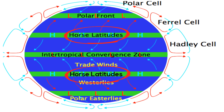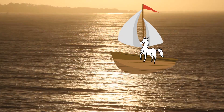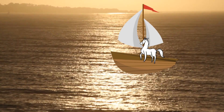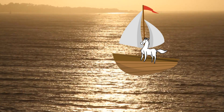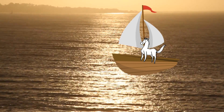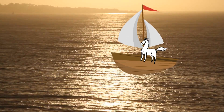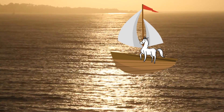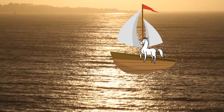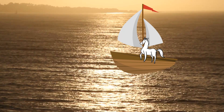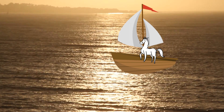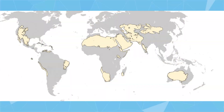These areas are called the horse latitudes because, according to legend, this name was given when sailing ships carried horses from Europe to America, and when the ships were stuck in the windless area, horses were maybe thrown overboard to save drinking water for the sailors. Remember, this is just a legend. Most of the world's deserts are located around the horse latitudes because the sinking air is very dry.